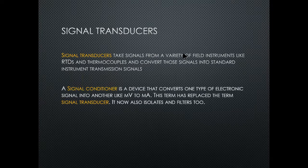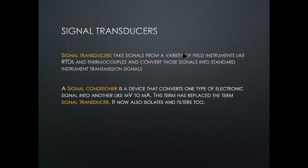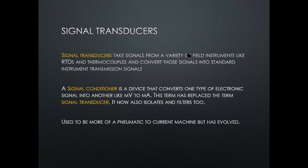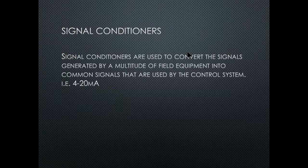A signal conditioner is a device that converts one type of electronic signal to another, like millivolts to milliamps. This term has been replaced by the term signal transducer. It now also isolates and filters signals. One of these things is actually an isolation device — it has galvanic isolation so there's no direct connection to the field such as wires and grounding. Signal conditioners are used to convert signals generated by a multitude of field equipment into a common signal used by the control system, like a four to 20 milliamp signal.